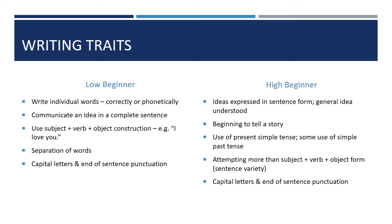Before we can assess writing, we have to know what we're looking for and how it changes depending on student level. Let's take a look at some writing traits. In low beginners, students should be able to write individual words and understand that a word is different from a sentence and different from a letter — letters, words, and sentences being foundational to English. When they write individual words, it's okay if it's phonetically spelled. Taking the sound you hear and piecing it together with the English alphabet is still a writing skill.